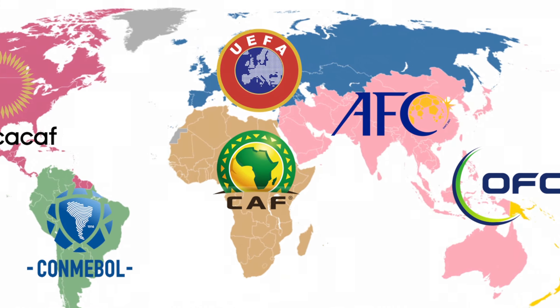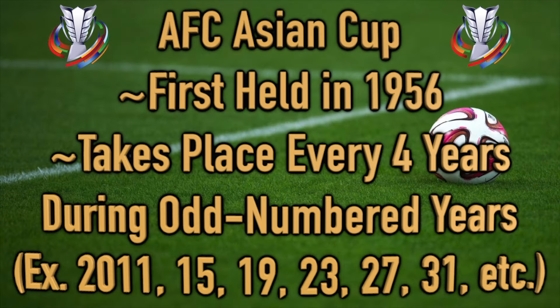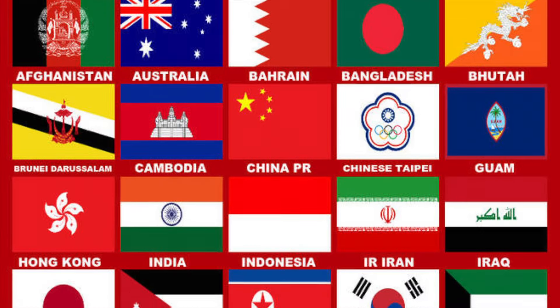With the Asian Cup, you have all the best Asian nations battling for continental glory. The Asian Cup was first held in 1956. It's a tournament that takes place every four years, just like the World Cup or the Euros. It was on an even-numbered year schedule, but since 2007 it's now played in odd-numbered years — so 2011, 15, 19, 23, 27, 31, etc. One exception: the 2023 edition will be played in 2024 due to adverse summer weather conditions in Qatar, but generally this event is played in odd-numbered years.